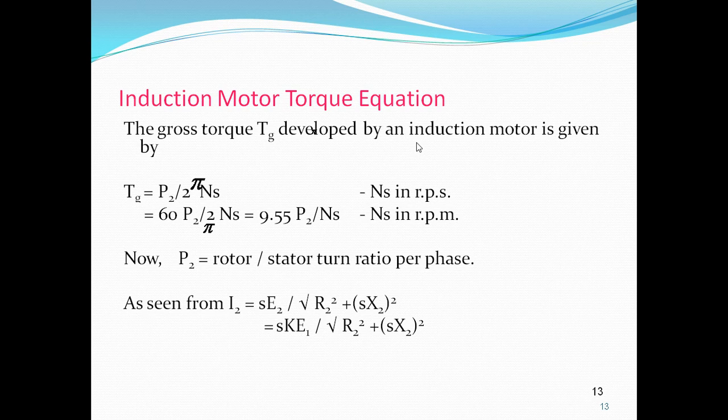If slip is increased beyond T maximum, as seen in the characteristics the torque decreases. As slip increases, S·X2 becomes large compared to R2, so torque and slip are inversely proportional to each other. Hence the torque-slip curve is a rectangular hyperbola in this region.